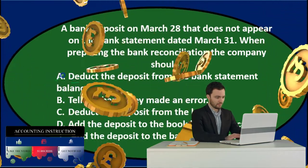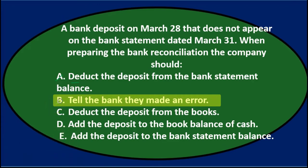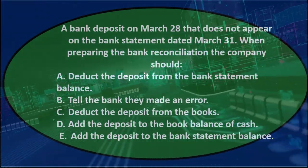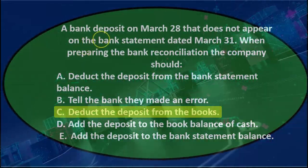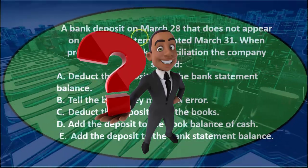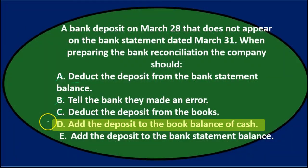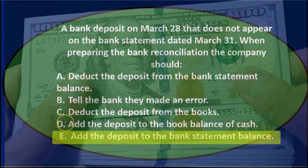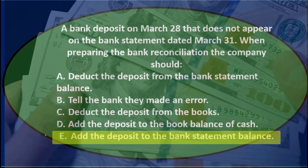A says deduct the deposit from the bank statement balance — we are looking at the bank statement balance, but we wouldn't deduct it, we'd add it, because the deposit is correctly on our side but not included in the bank statement. B says tell the bank they made an error — the bank didn't make an error, they just don't have the information yet. C says deduct from the books — our books are correct, so no adjustment needed there. D says add to the book balance — again our books are correct. E says add the deposit to the bank statement balance — that looks correct.